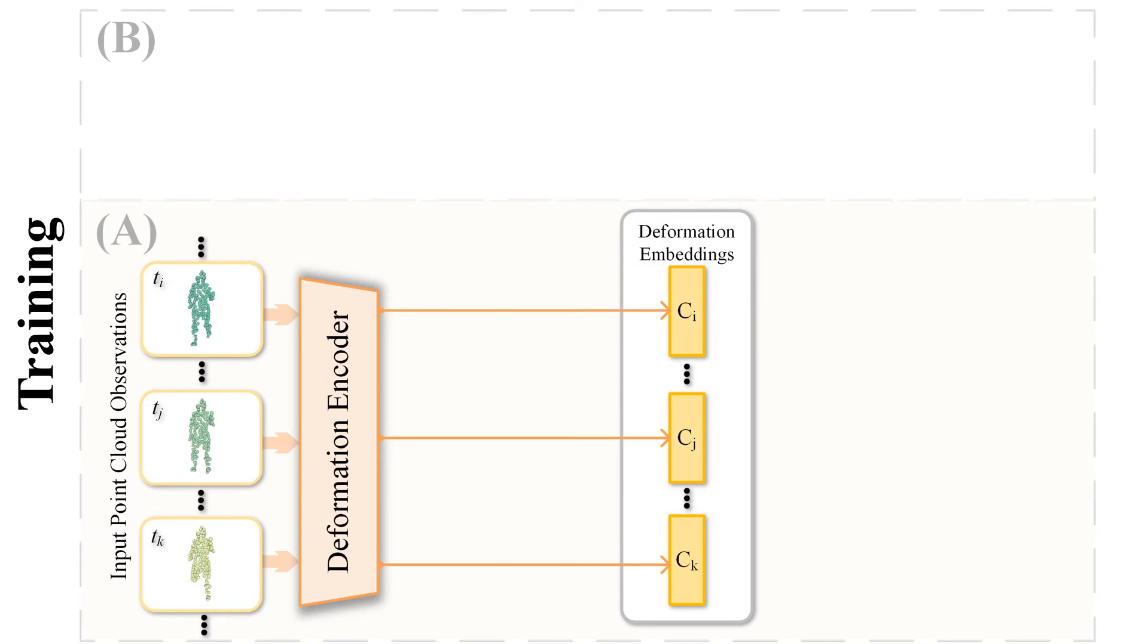We first go through the training phase. The input point clouds are first processed by a deformation encoder that produces deformation embeddings for each frame. These deformation embeddings will later be used as the conditions for neural homeomorphism to characterize the canonical map that associates each deformed frame with the canonical frame.